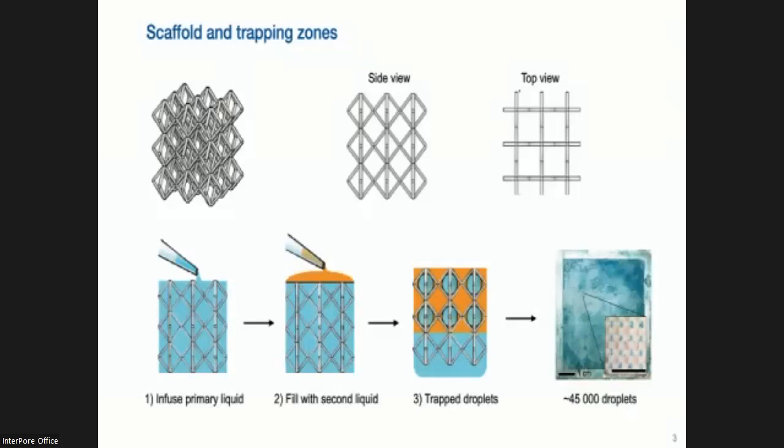So given this geometry with these trapping zones, basically what we do to create droplets is to infuse it with a primary liquid. And then at the second step, we fill it with a second liquid. So the second liquid idea is that the second liquid would displace the first liquid everywhere except in the trapping zones. So it's a very simple idea and it's very scalable.